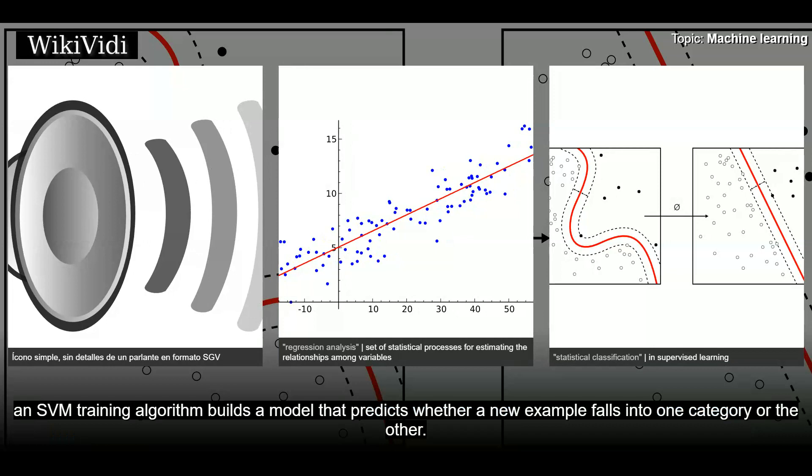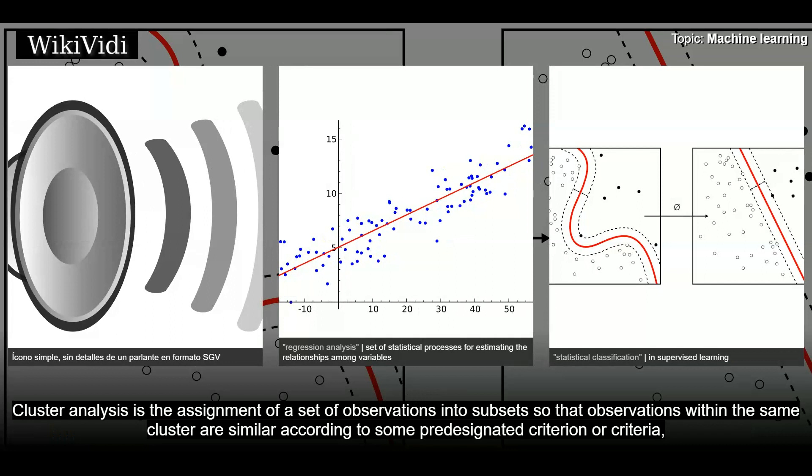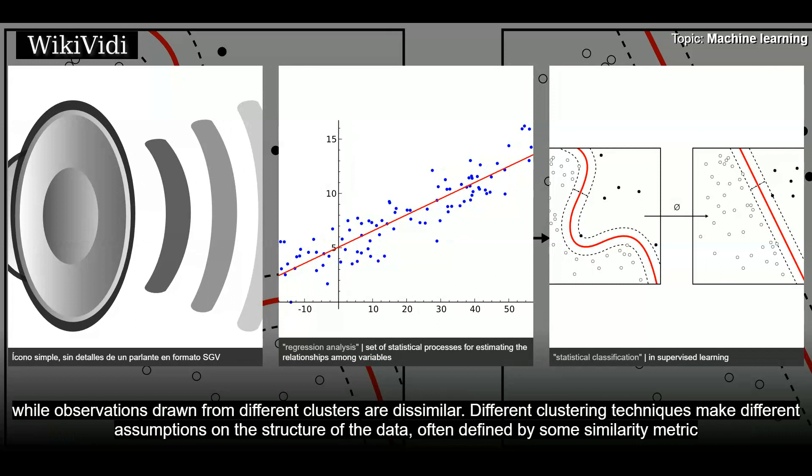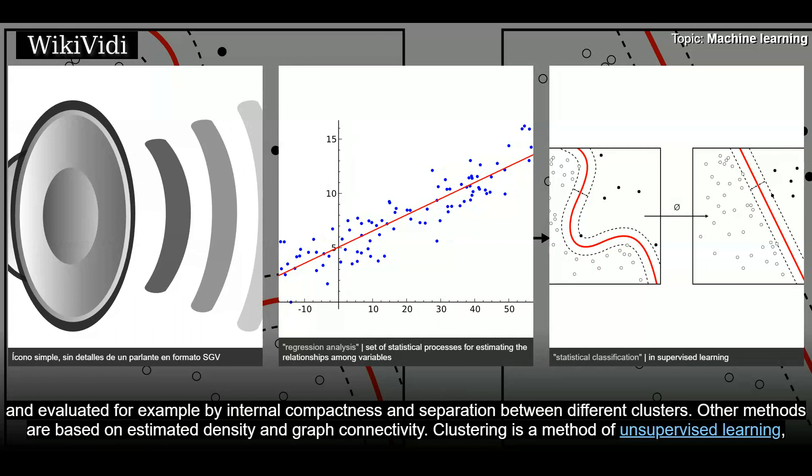Clustering. Cluster analysis is the assignment of a set of observations into subsets so that observations within the same cluster are similar according to some pre-designated criterion or criteria, while observations drawn from different clusters are dissimilar. Different clustering techniques make different assumptions on the structure of the data, often defined by some similarity metric, and evaluated for example by internal compactness and separation between different clusters. Other methods are based on estimated density and graph connectivity. Clustering is a method of unsupervised learning and a common technique for statistical data analysis.